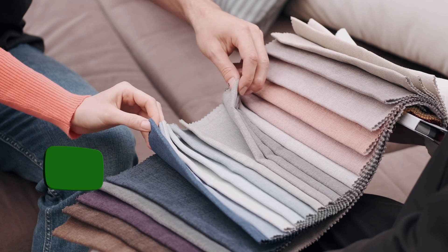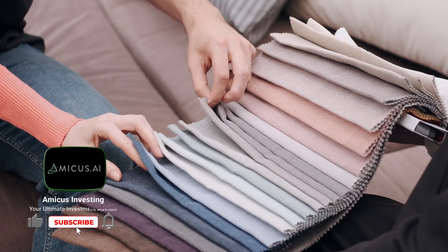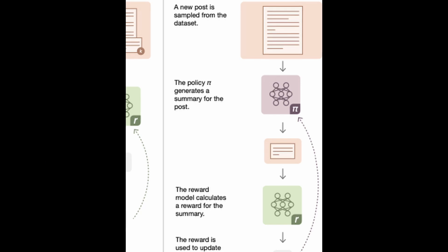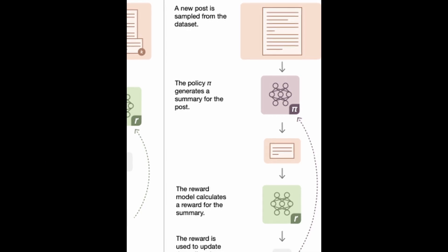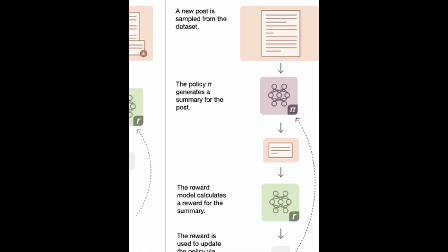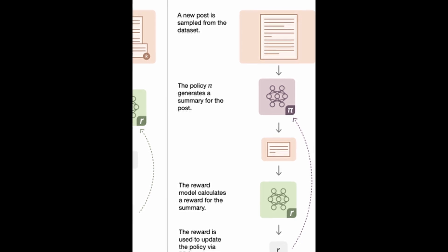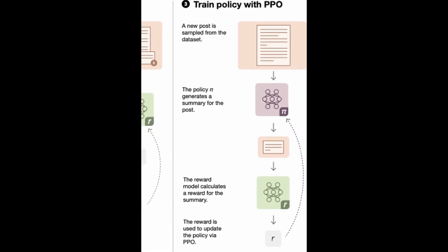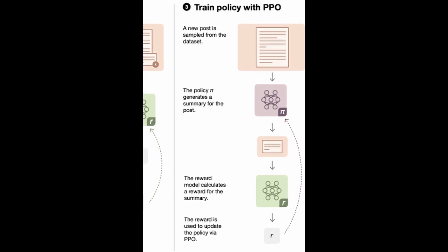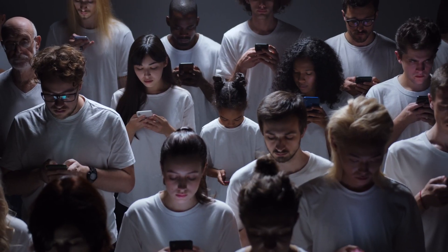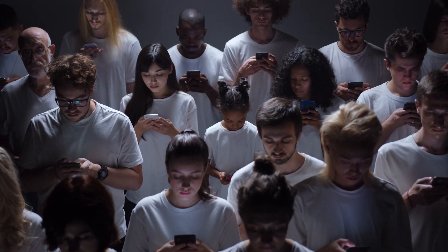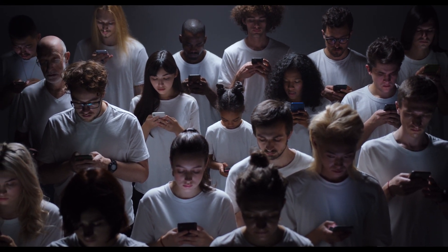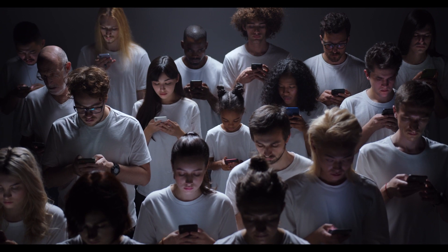The reward model calculates a numerical value — the reward — given to the reinforcement learning model. PPO optimization, or Proximal Policy Optimization, is used to fine-tune the model's response generation process. The goal is to help the model generate responses that result in higher rewards — meaning better ratings from human experts — while avoiding sudden changes in behavior that could cause instability.